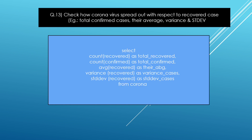The next question is: check how coronavirus spread with respect to recovery cases — for example total confirmed cases, their average, variance, and STD. Similar to the previous question, but using COUNT(recovered), COUNT(confirmed), AVG(recovered), VAR(recovered), and STD(recovered) from the corona table.